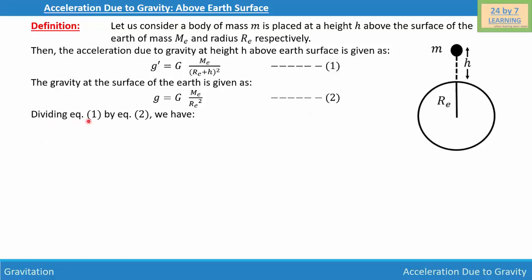Dividing equation one by equation two, we get g'/g = [GMe / (Re + h)²] / [GMe / Re²]. Simplifying further, we get g'/g = Re² / (Re + h)².